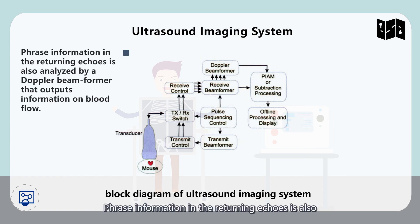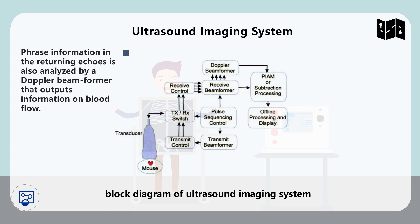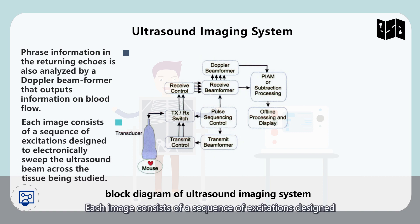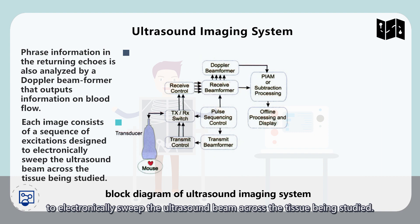Flow information in the returning echoes is also analyzed by a Doppler beamformer, which then outputs information on blood flow. Each image consists of a sequence of excitations designed to electronically sweep the ultrasound beam across the tissue being studied.